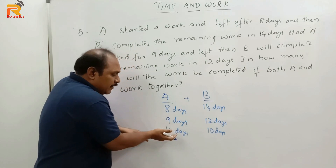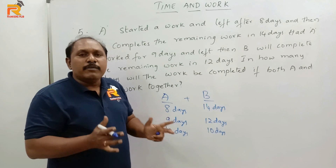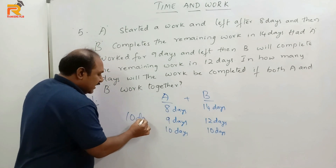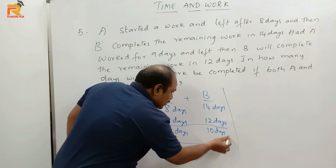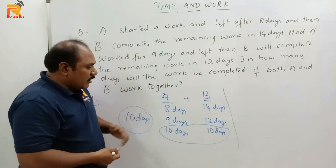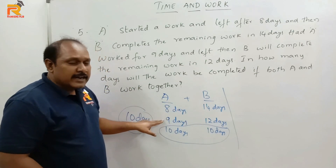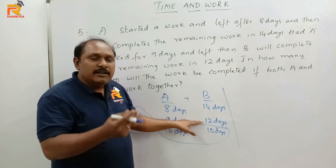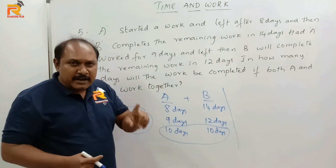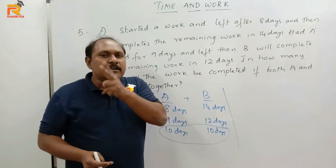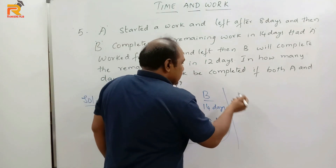So if A worked for 10 days and left, and B completed the remaining work in 10 days, then if both work together the work is completed in 10 days. Now let us verify using the chocolate method. A is twice as efficient as B, so if B eats 1 chocolate per day, A eats 2 chocolates per day. A worked for 8 days eating 8 × 2 = 16 chocolates, and B worked for 14 days eating 14 × 1 = 14 chocolates. The total work is 16 + 14 = 30 chocolates.